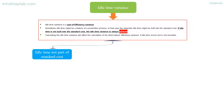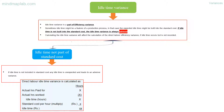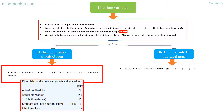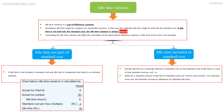Idle time not part of standard cost: if idle time is not included in standard cost, any idle time is unexpected and leads to an adverse variance. Direct labor idle time variance is calculated as: standard cost per unit multiplied by the difference between actual hours paid for and actual hours worked. Idle time included in standard cost: include idle time as a separate element of standard cost so that the standard cost of idle time is part of total standard cost per unit, or allow for a standard amount of idle time in standard hours per unit. The standard hours per unit therefore include an allowance for expected idle time.